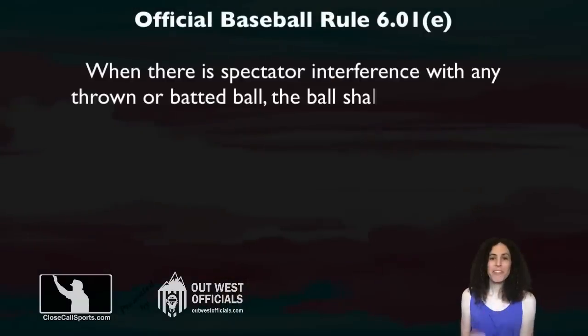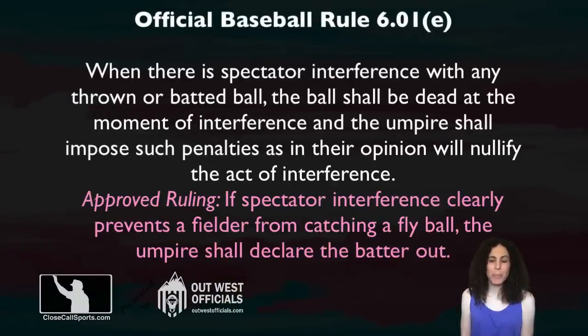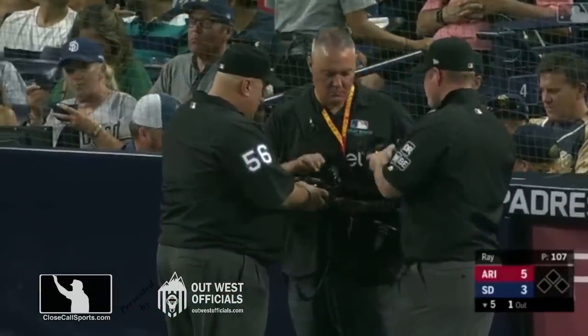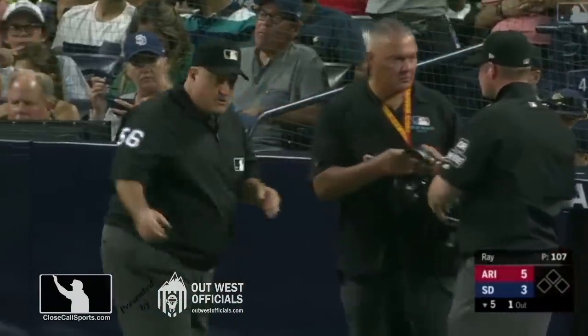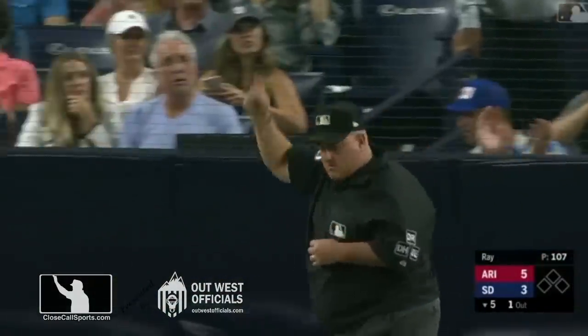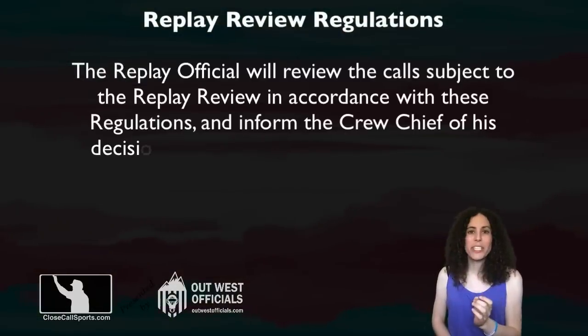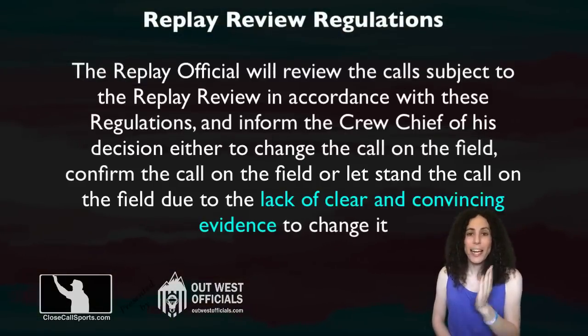The penalty for spectator interference is to nullify the act. If the umpire believes the fielder would have caught the ball absent spectator interference, the umpire shall award the out. The problem lies with clear and convincing evidence proving the fan actually reached out over the playing field when he hindered the fielder.